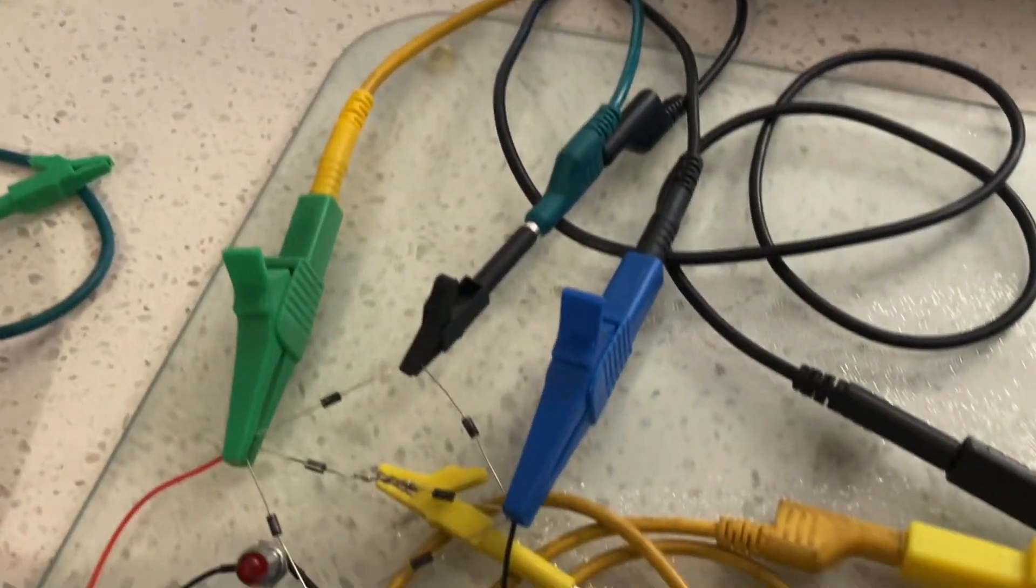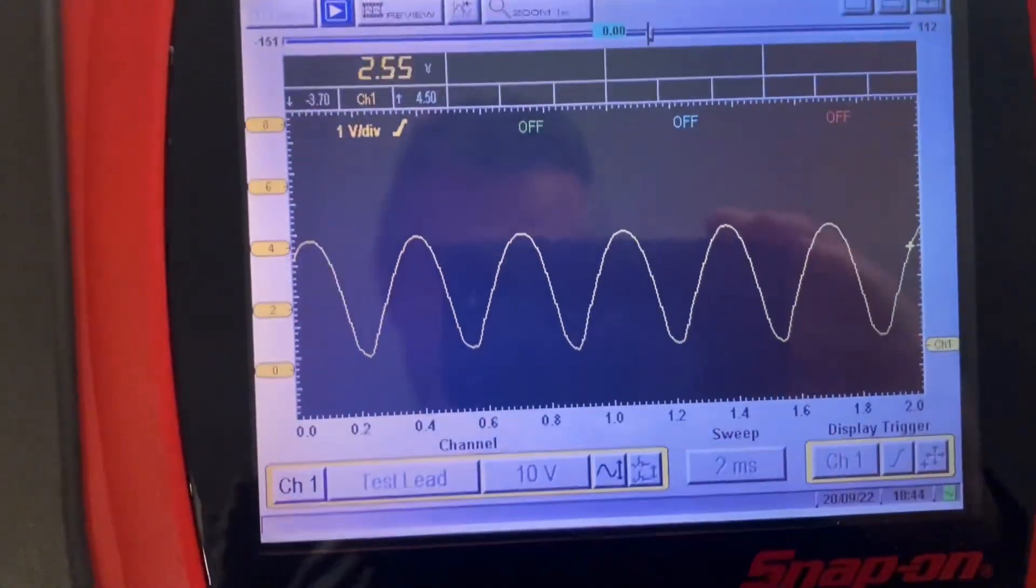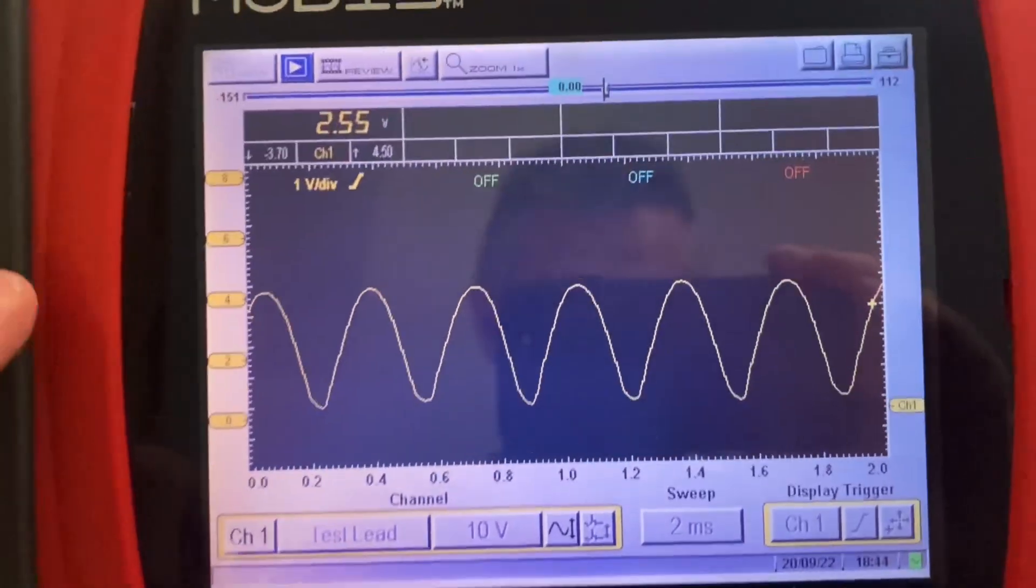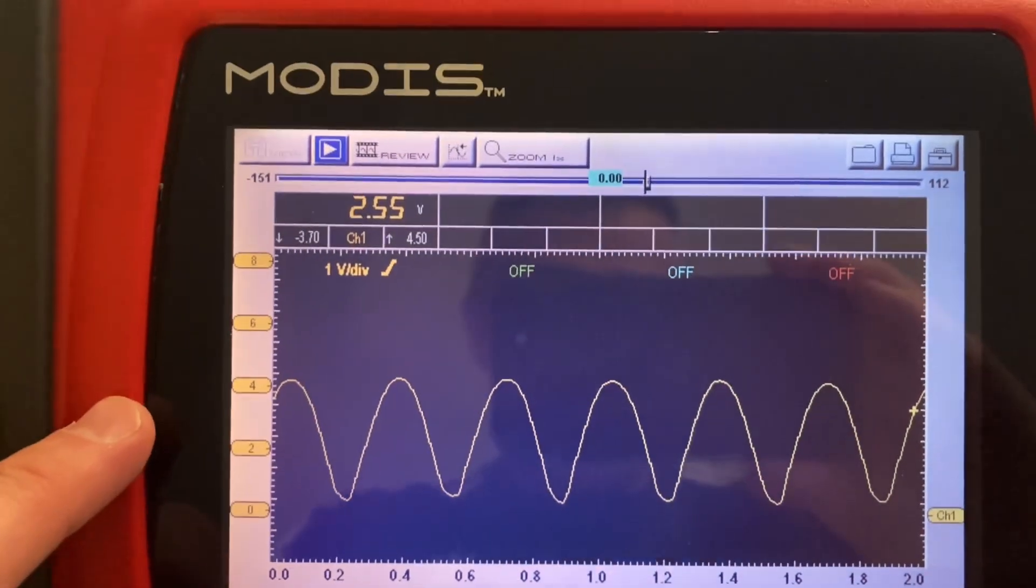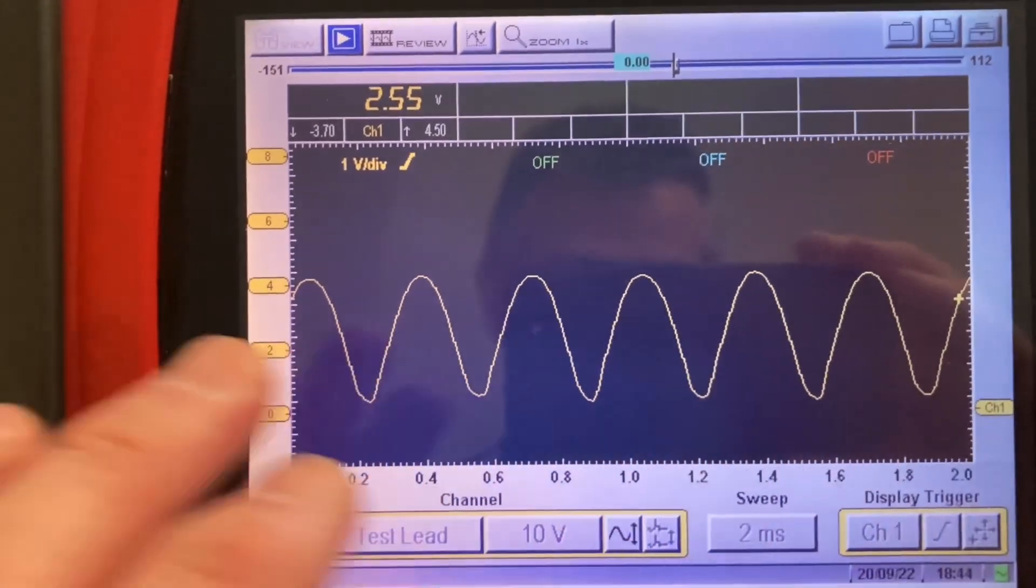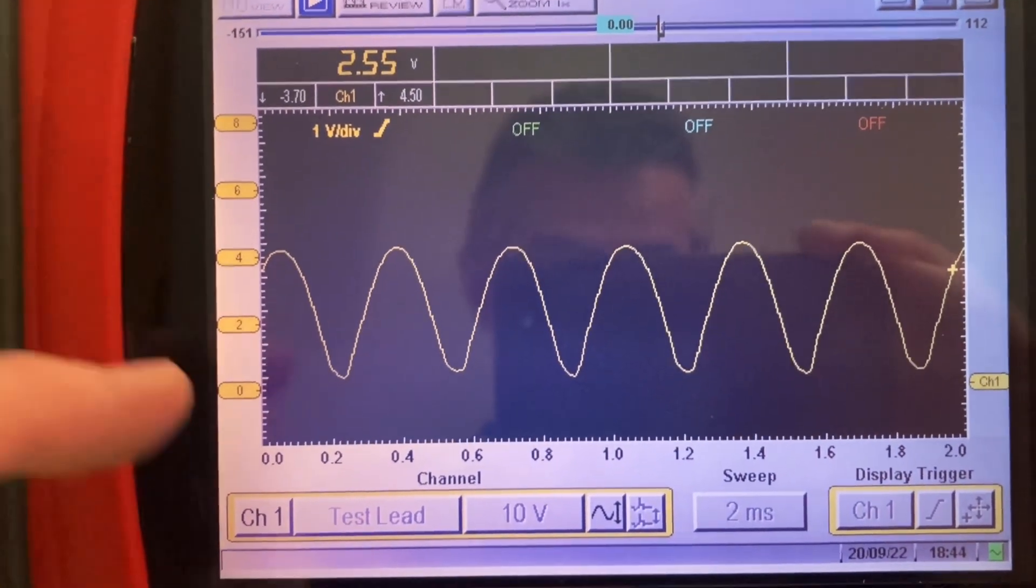Drastic impact. You could see how you could likely continue to operate. Obviously you're not going to have adequate charging if this was a real world scenario with your alternator. You still have some DC, as massively rippled as it is, this is effectively DC, it's above the line.